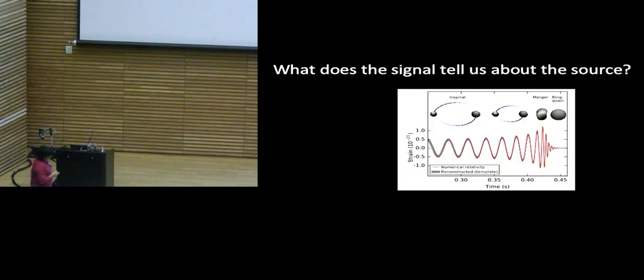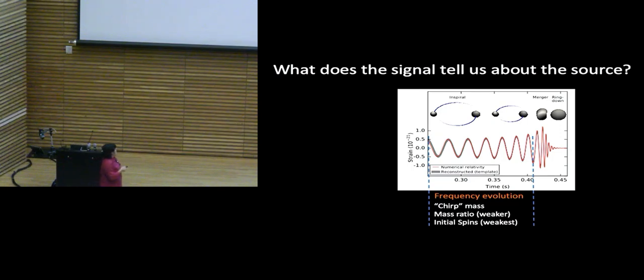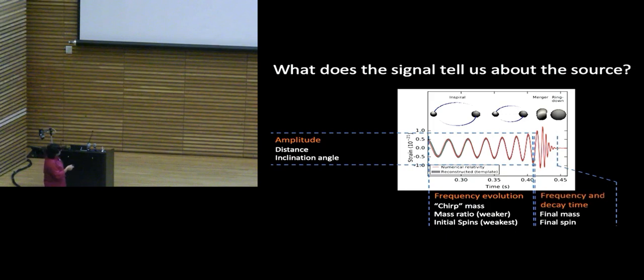What do we learn from this signal? In a very cartoonish way, there's three things you can take away from this. From the frequency evolution, from the fact that the frequency of this wave is changing with time, we can infer the masses of the black holes. From the amplitude, we can infer how far they are. And then finally, from looking at this decay, the frequency and decay time, we can tell what the mass and spin of the newly formed, the final black hole was. So here are the two components, and eventually they form a single black hole. And we can tell a lot about the system from these data.